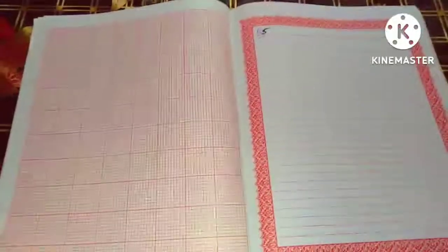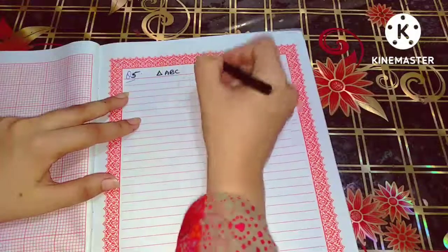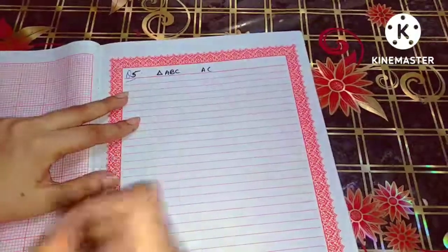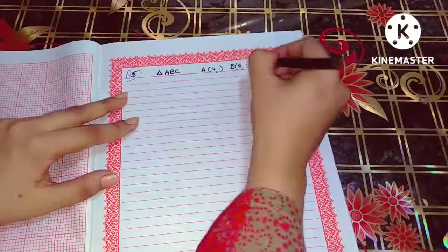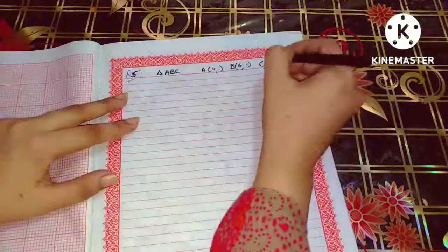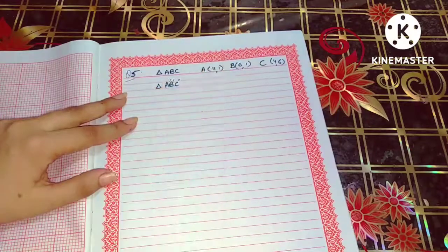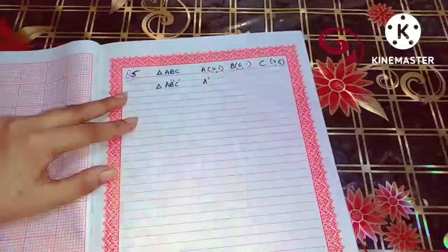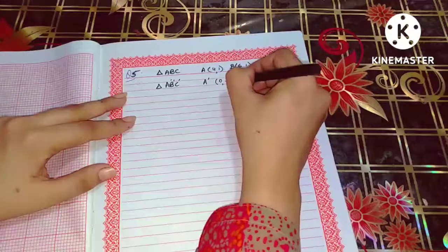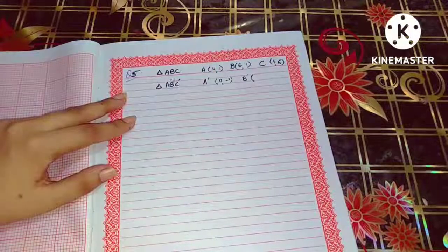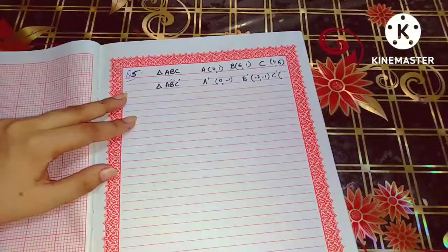First, I'm going to draw triangle ABC. The coordinates of A are (4, 1), B is (6, 1), and C is (4, 6). They have also given the rotated triangle A'B'C', so the coordinates of A' are (0, -1), B' are (-2, -1), and C' are (0, -6).